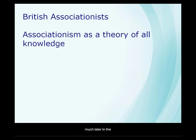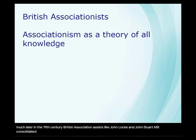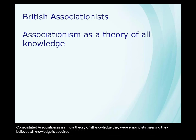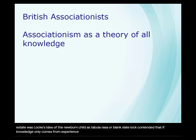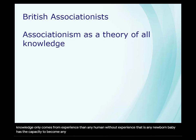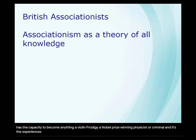Much later, in the 19th century, British associationists like John Locke and John Stuart Mill consolidated associationism into a theory of all knowledge. They were empiricists, meaning they believed all knowledge is acquired through experience. One important idea for the British associationists was Locke's idea of the newborn child as tabula rasa, or blank slate. Locke contended that if knowledge only comes from experience, then any newborn baby has the capacity to become anything — a violin prodigy, a Nobel prize-winning physicist, or a criminal. And it's the experiences they have, no matter what they were born with, that make that possible.